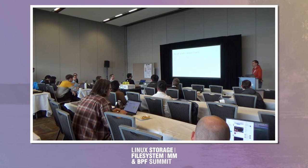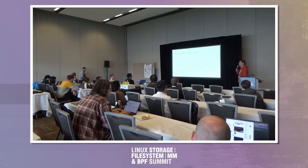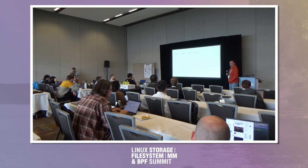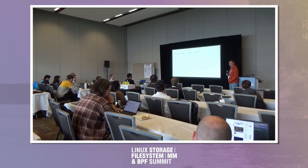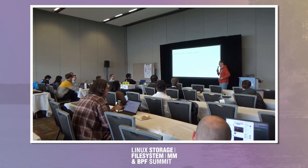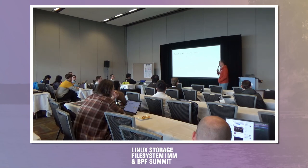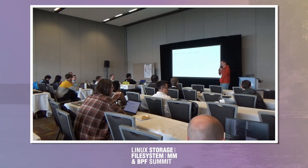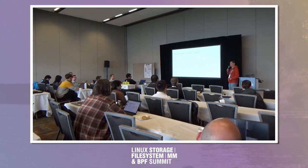Q: When are you going to upstream this? A: Soon. Q: How much code is xxh3? Because it has a lot of special casing for different ranges of keys. A: Maybe 1,500 lines, something like that. It's not that bad — it's straightforward to port to kernel style.